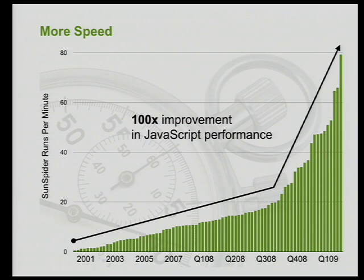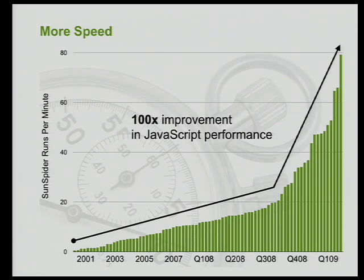Let's just stop for a moment. Did you realize that in the last decade, we have seen a hundred X improvement in JavaScript parsing? Think about the implications — what we thought was impossible to do in the browser with JavaScript may now become possible. Of course, that's just one example of technological improvement, and we're going to show you lots more today.